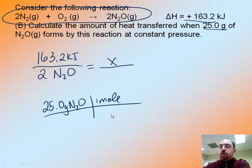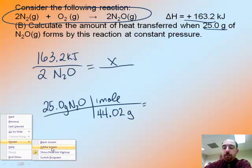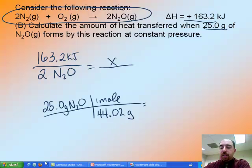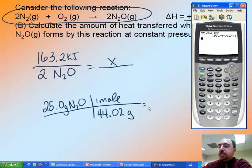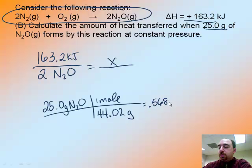One mole of any substance is equal to the weight from the periodic table. So you've got 14.01 plus 14.01 plus 16 is 44.02 grams. Pull out your handy-dandy calculator. So we've got 25 divided by 44.02 is 0.568. And this is for N2O. So this number is going to come up in here.